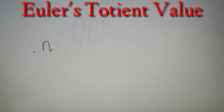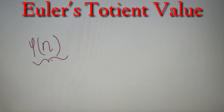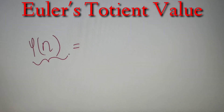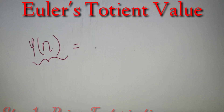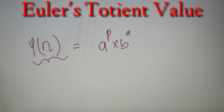If we have a number n, we use the phi function to represent the Euler's Totient value, and φ(n) gives the Euler's Totient value of any given number. When we say we have to find the Euler's Totient value, we mean we have to find all the co-prime numbers of n that are less than n. To find it, we use two simple steps. First, prime factorize the given number — let's say the prime factorization of n is a^p × b^q × c^r and so on.